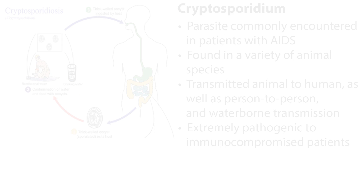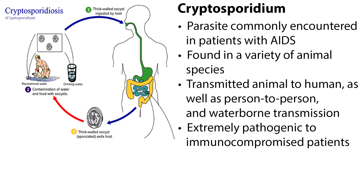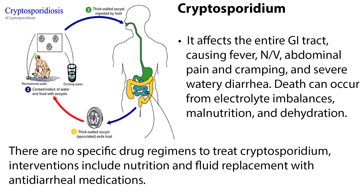Protozoal infections are caused by a variety of organisms, many of which are parasitic. Cryptosporidium is a parasite commonly encountered in patients with AIDS. It is found in a variety of animal species and is transmitted animal to human, as well as person to person and by waterborne transmission. It affects the entire GI tract, causing fever, nausea and vomiting, abdominal pain and cramping, and severe watery diarrhea. Death can occur from electrolyte imbalances, malnutrition, and dehydration. There are no specific drug regimens to treat cryptosporidium; interventions include nutrition and fluid replacement with antidiarrheal medications.